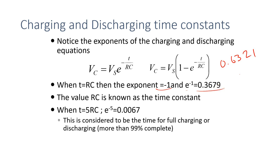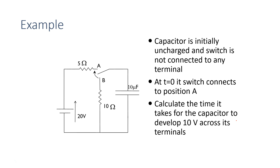At 5·RC, we have e^(−5) which is 0.0067, meaning charging or discharging is more than 99% complete. We consider 5 time constants to be the time for full charging or discharging. So you can determine how long the capacitor takes to charge and discharge completely just by knowing the values of R and C, without having to go through any differential equations.